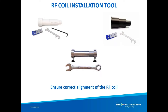In addition to RF coils, Glass Expansion also offers proper installation kits. These ensure correct alignment of the RF coil with respect to the torch body, which reduces de-vitrification on the outer tube. Each kit comes with the necessary alignment jig and tools, as well as a USB drive containing instrument-specific installation instructions, saving you time and the cost of a service call.